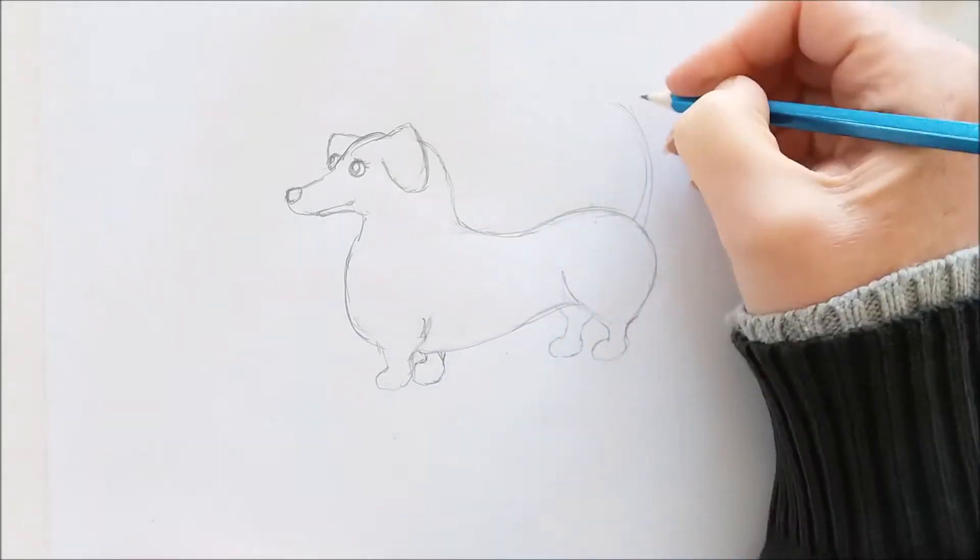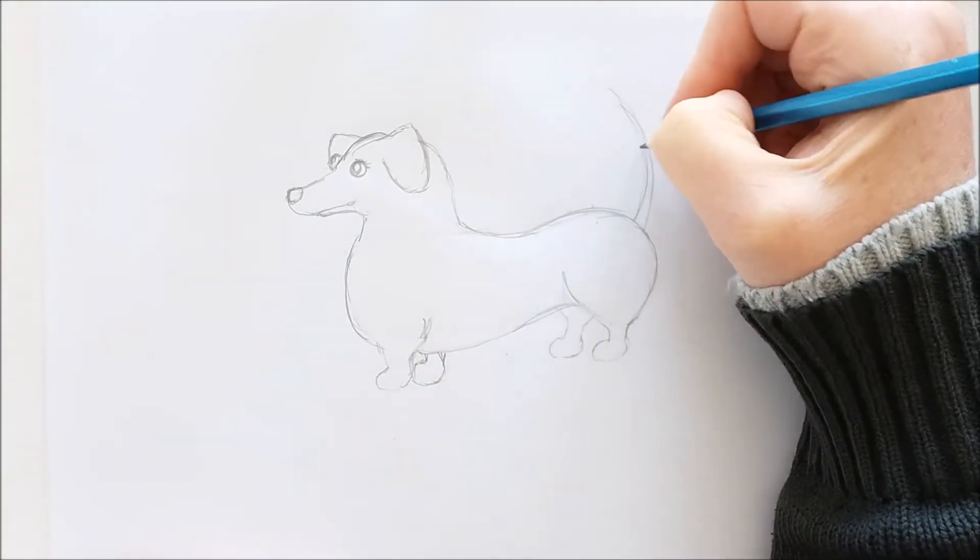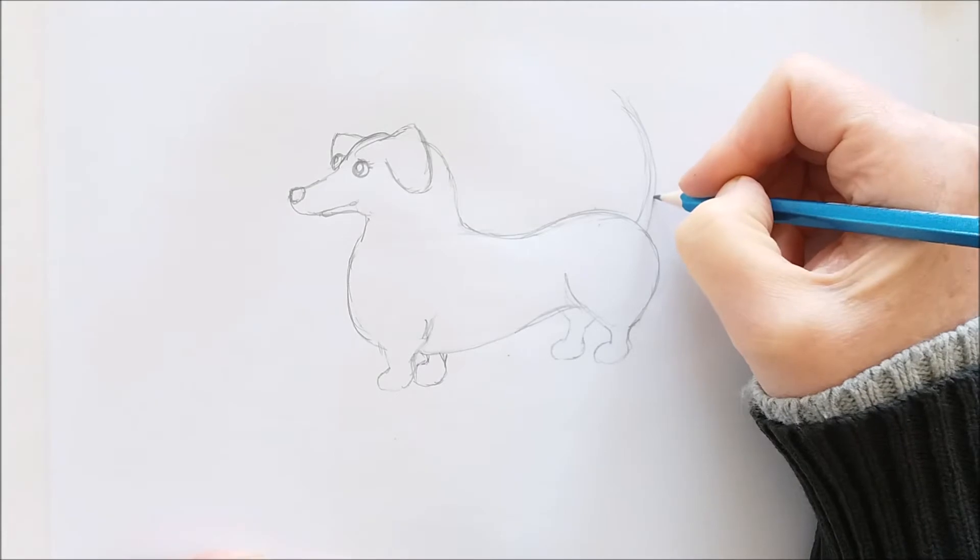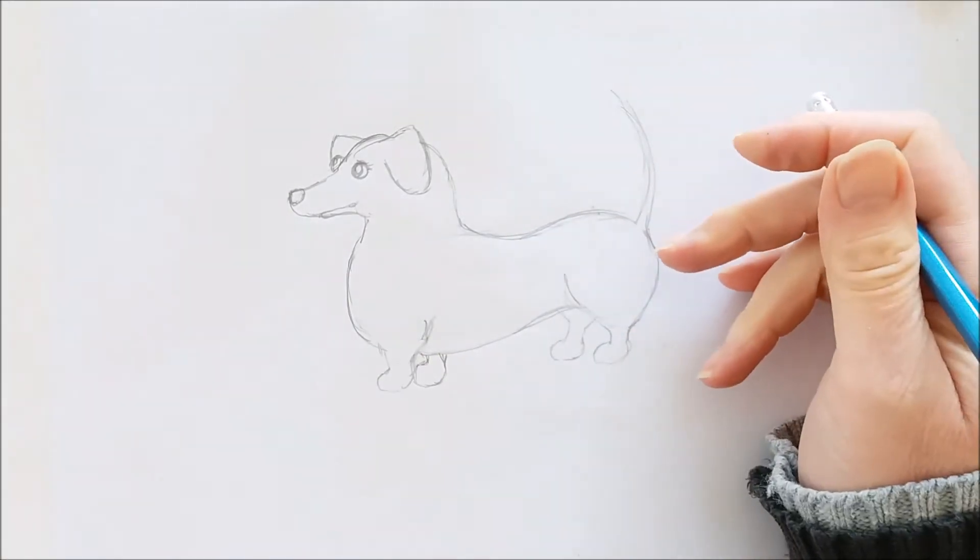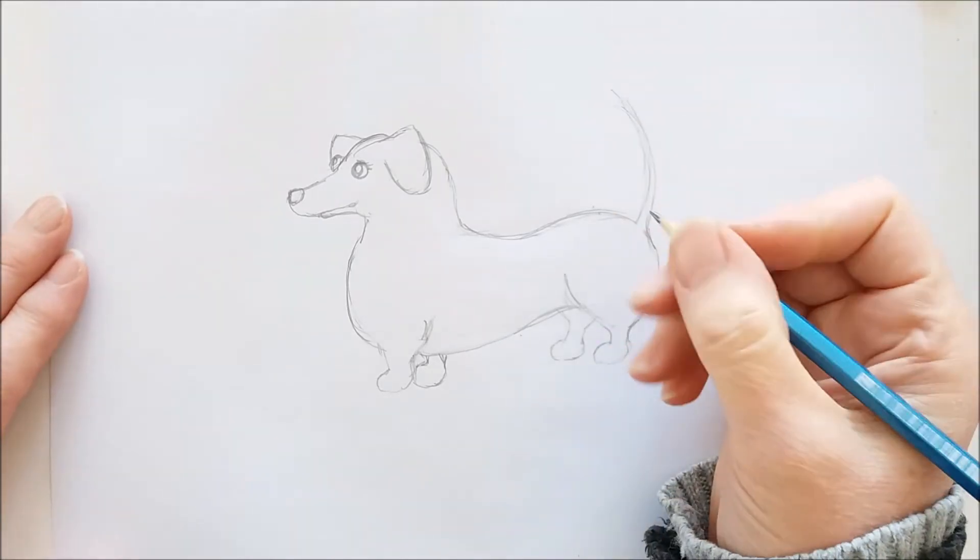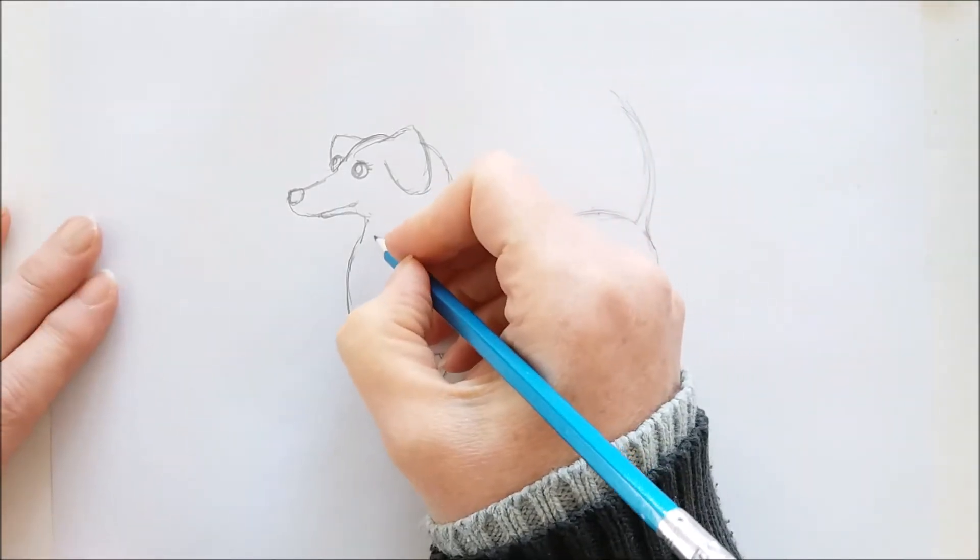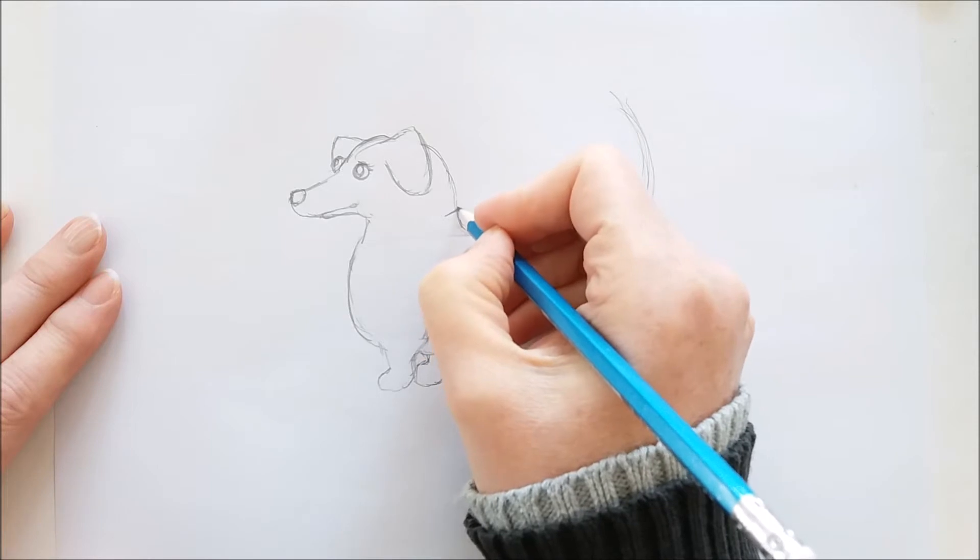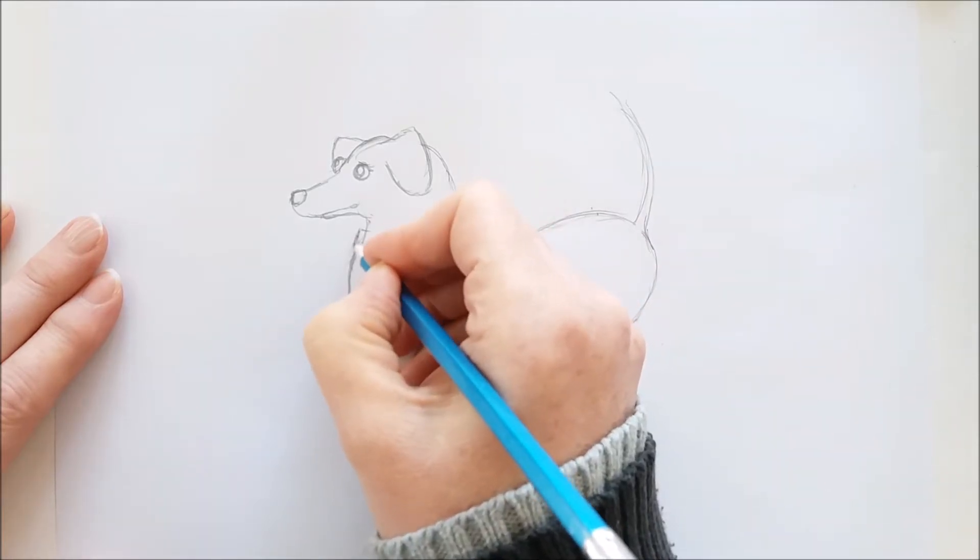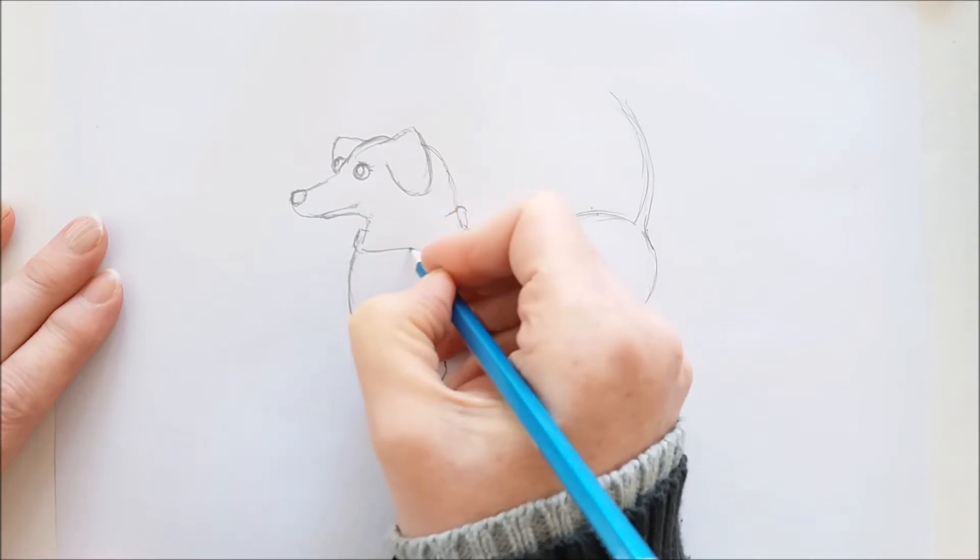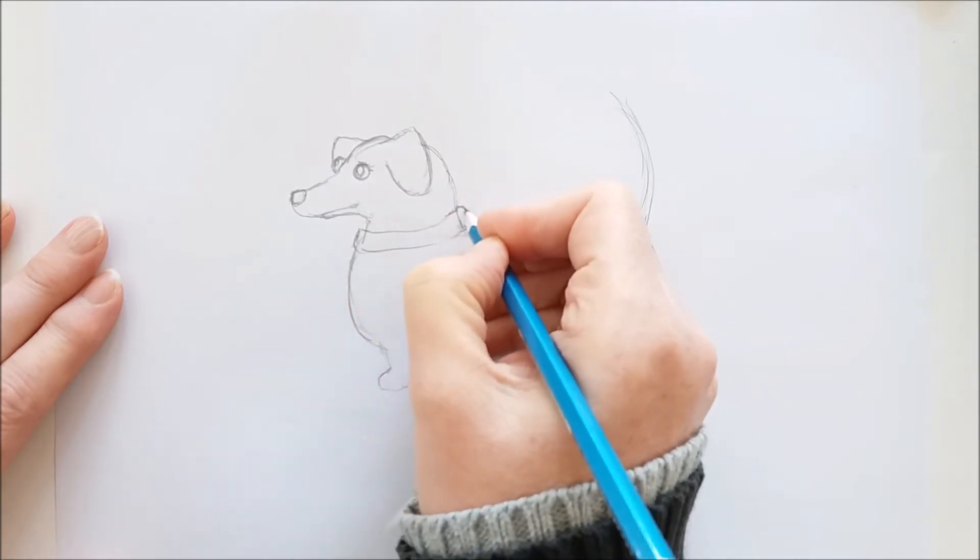So I'm going to outline the entire image and then draw the collar in. And I'll start by just drawing a little square shape at both sides of the neck and then connect it with a line. And it's as simple as that. You have the collar on the dog.